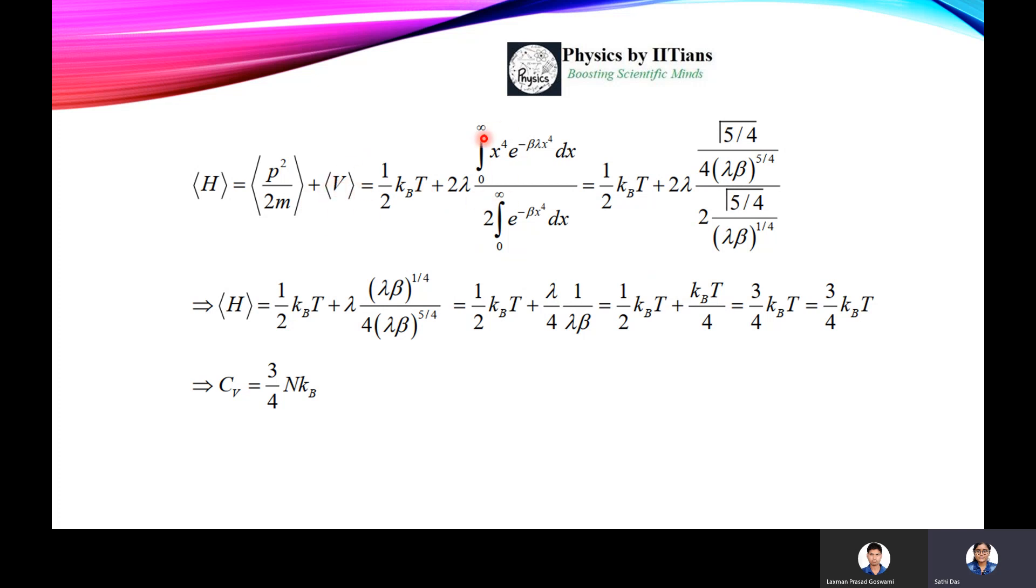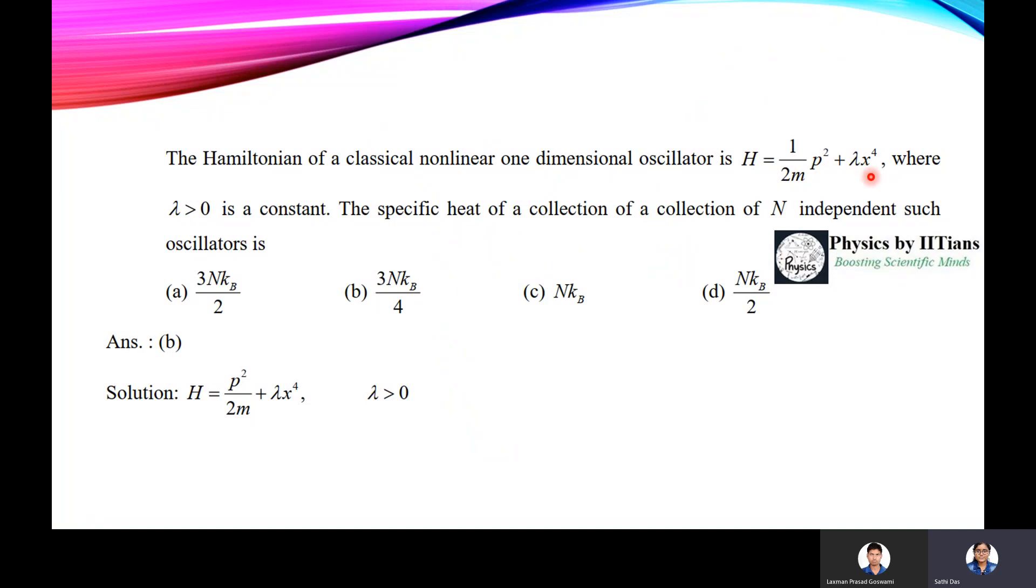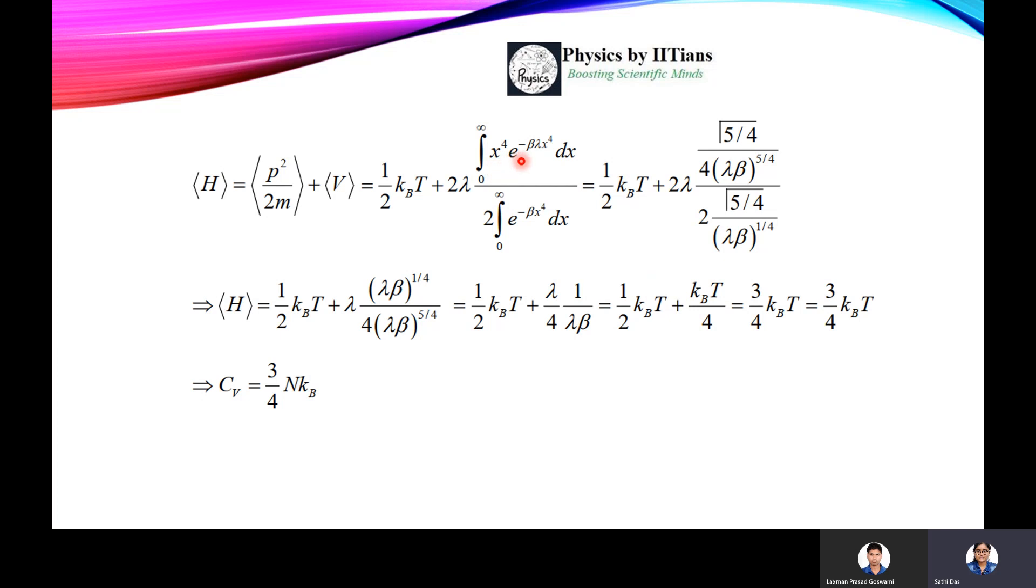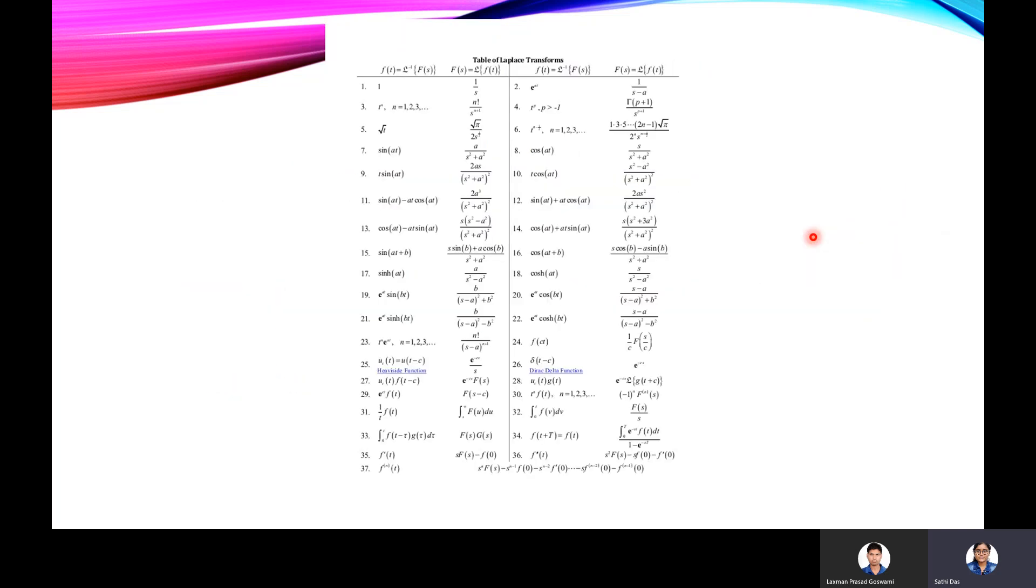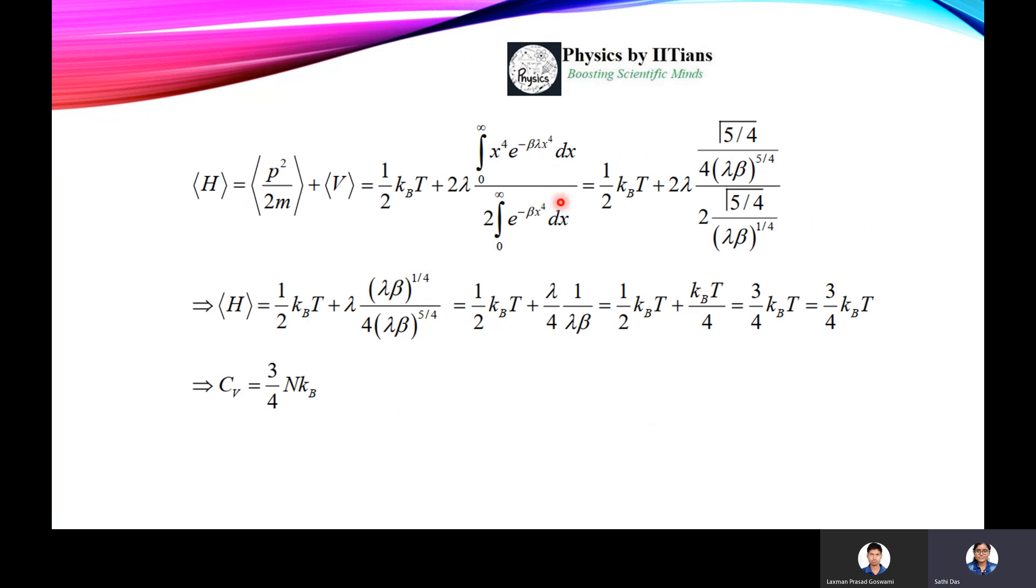Average of any quantity, how do you find? We have to take the average of any statistical mechanical quantity. Here look, V has been given as lambda x to the power 4, and this is H. So we have to take lambda into x to the power 4 into H divided by H. Actually, we take the normalized average quantity for any fx quantity. So we have to take like this way: 2 lambda into integration 0 to infinity x to the power 4 e to the power minus beta lambda x to the power 4 dx, divided by 2 into integration 0 to infinity e to the power minus beta x to the power 4 into dx.